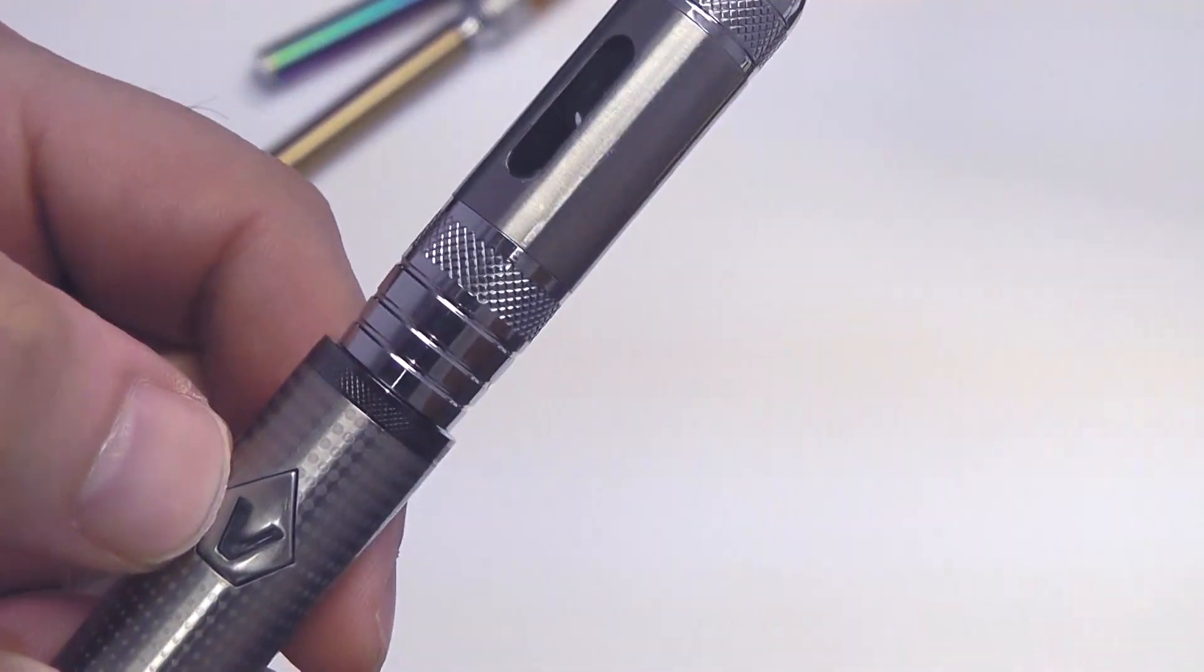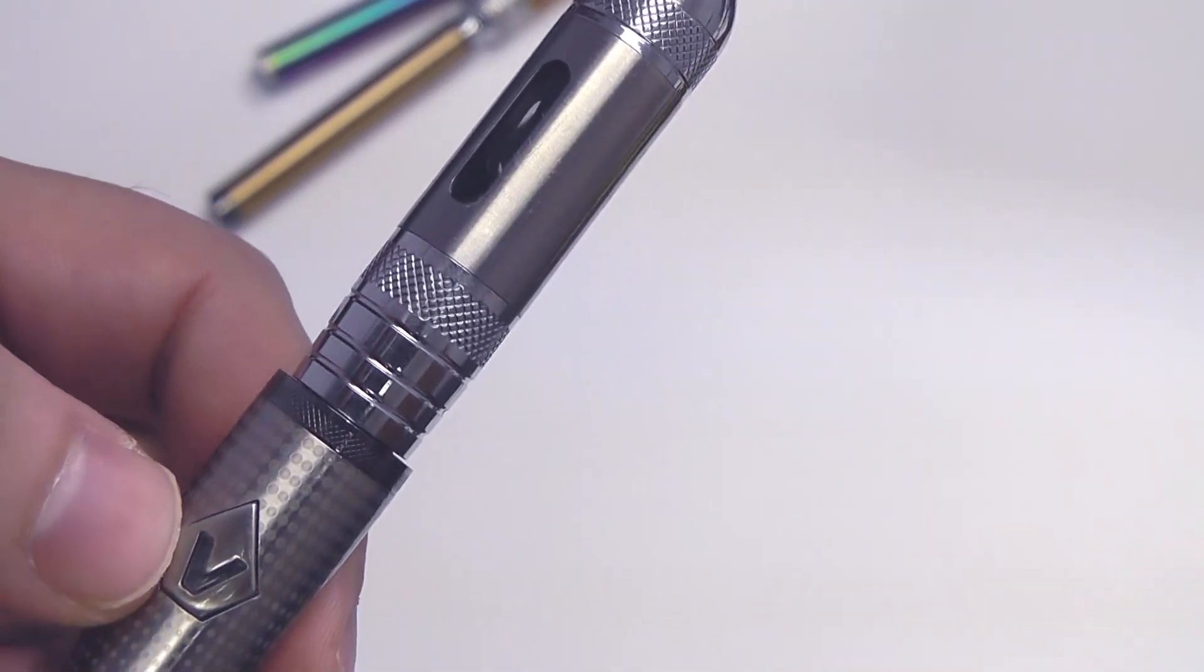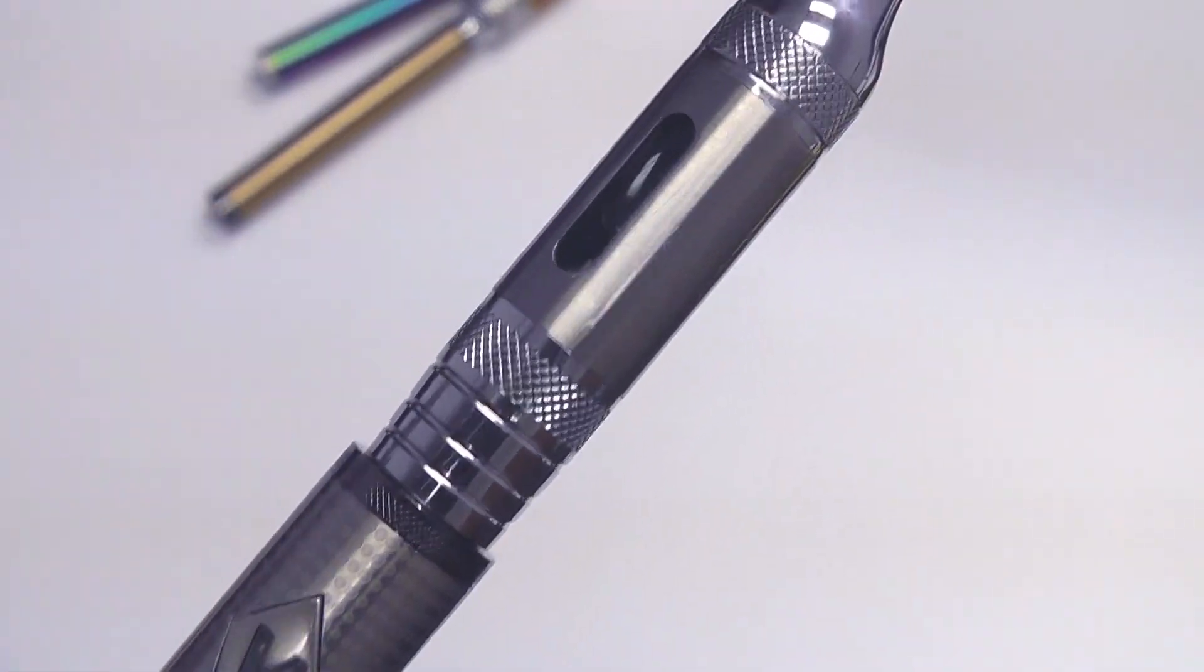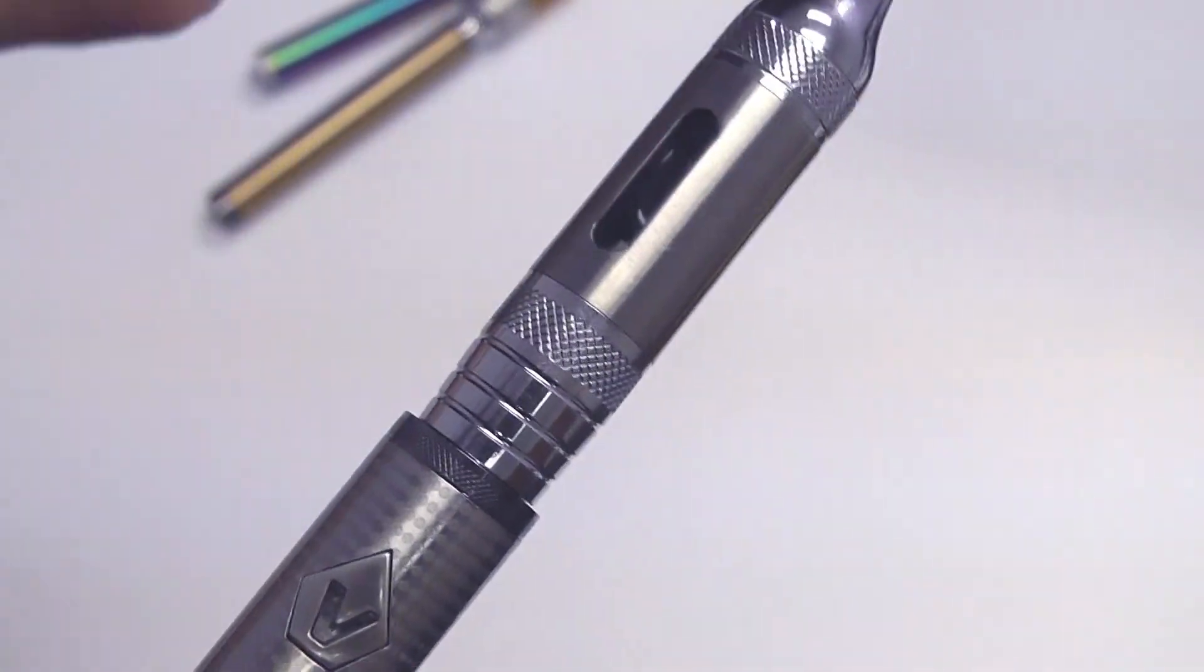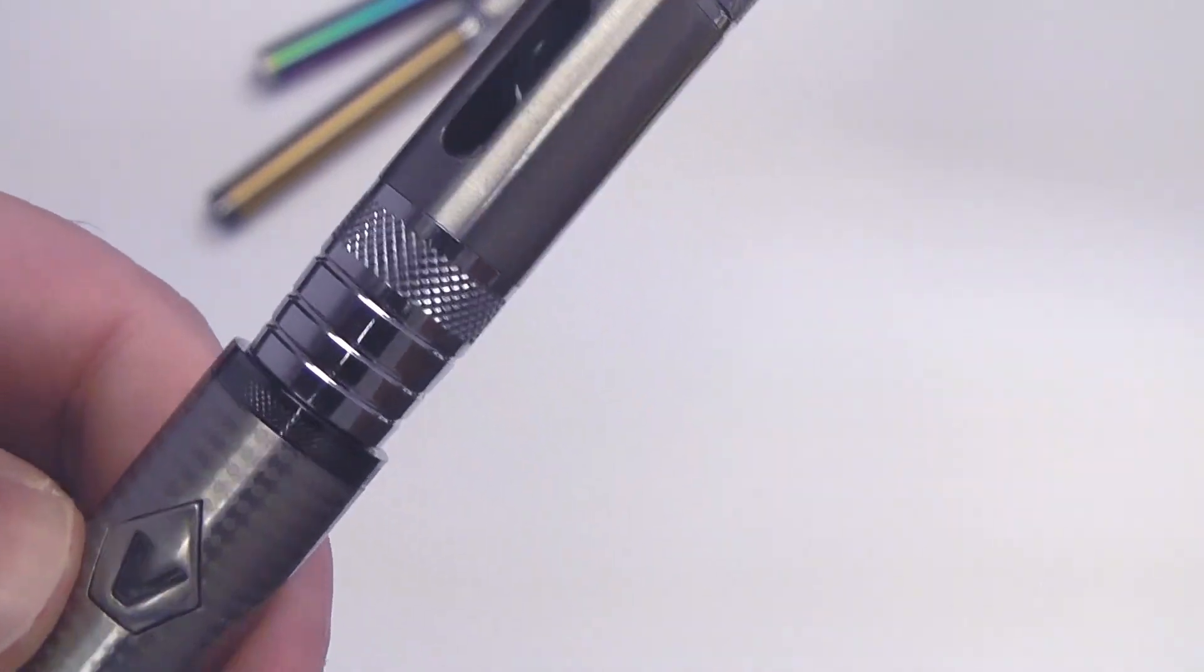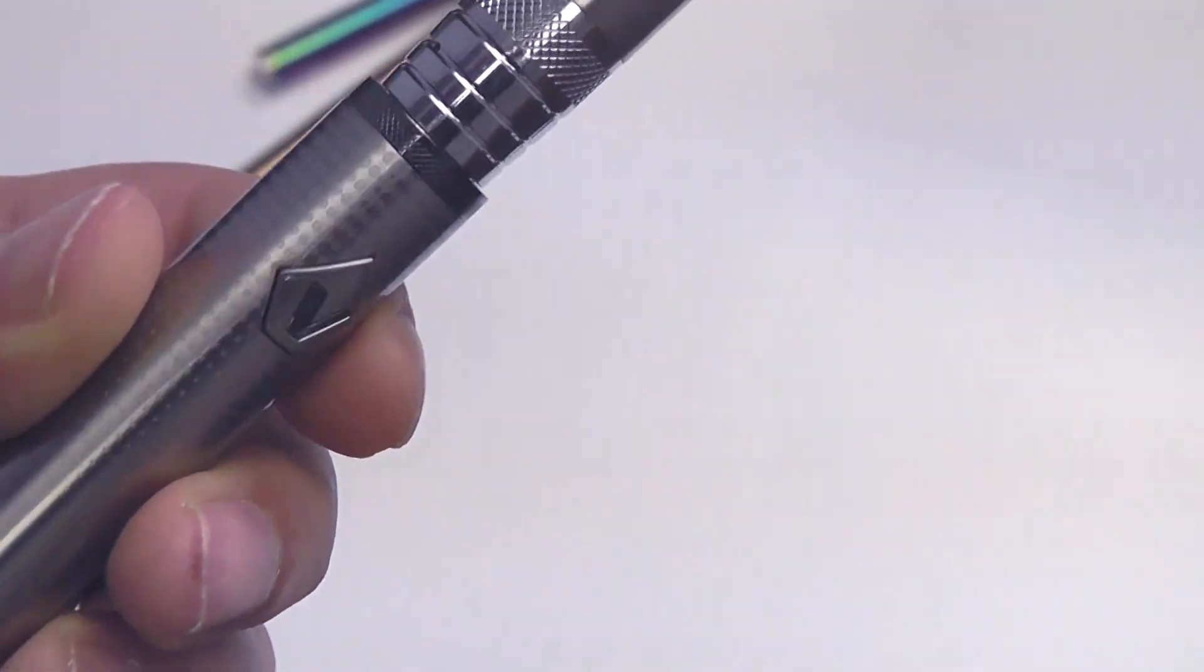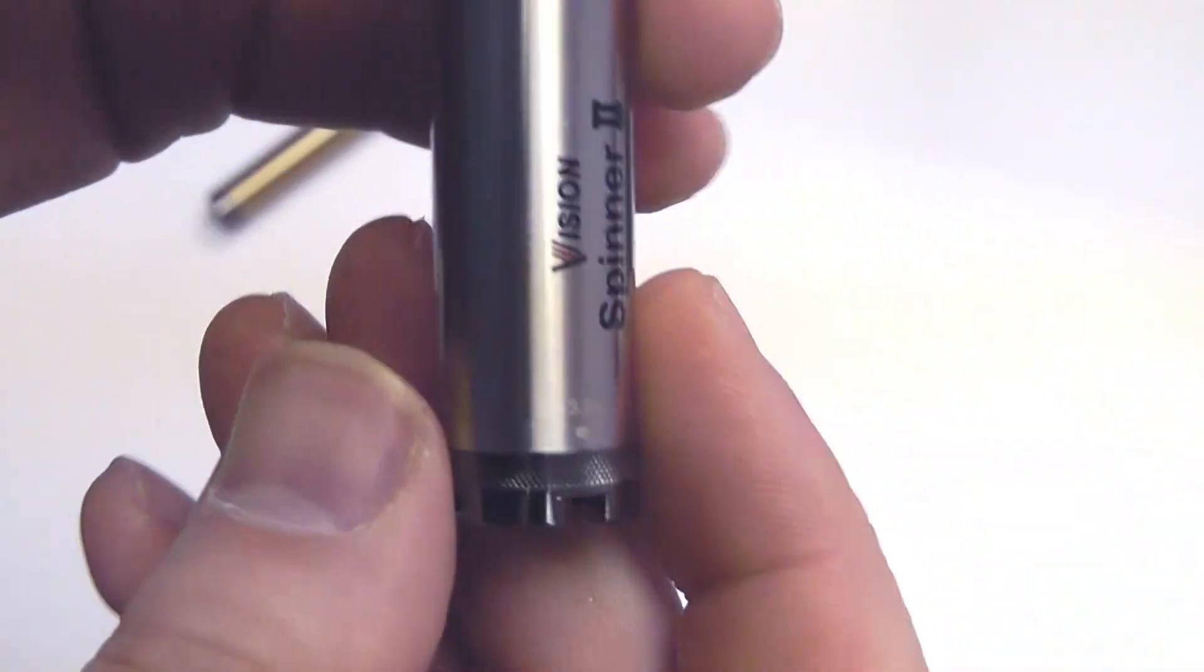You're going to need to charge it fairly soon, so don't plan on taking it out for the next couple of days in a row without giving it a charge. Then when you get down to 30 percent and below, it's going to change to an orange light, and that's going to let you know that you need to charge it right away or it's going to give out on you.